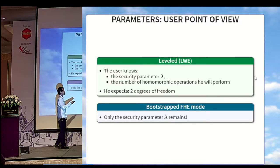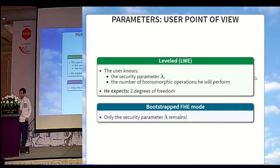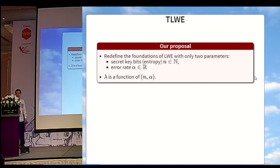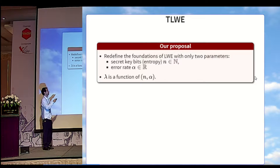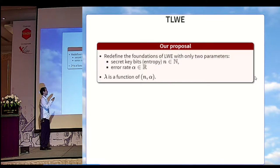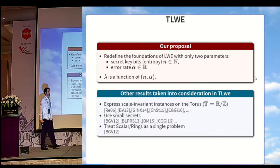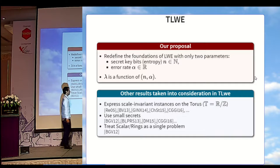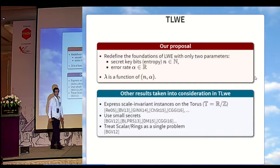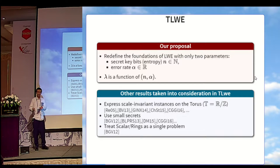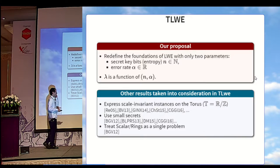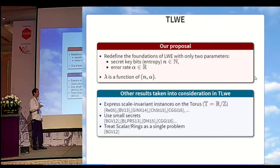We also included other famous results, like the fact that anything scale-invariant should be expressed directly on the continuous torus — the real numbers modulo one. We should use small secrets so that our instances are directly connected without any intermediary to worst-case instances and other average-case instances. Also, we should treat scalar and ring as a single problem, since it was noticed in 2012 that they are syntactically equivalent.